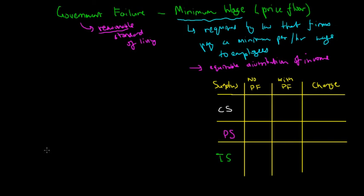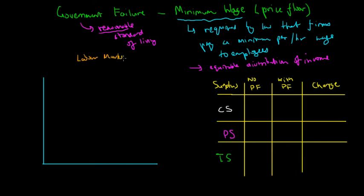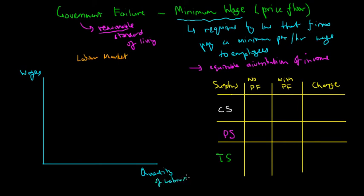Let's look at the labor market. On the y-axis, where we usually have price, we're going to look at wages instead. On the x-axis, where we usually have quantity, we're going to look at the quantity of labor. So instead of price we have wages, and instead of quantity we have quantity of labor.